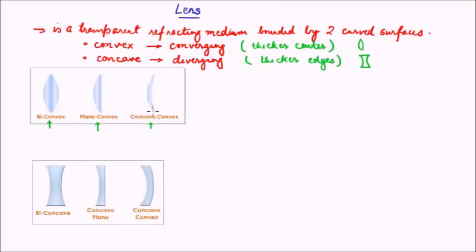In the concavo-convex lens, one surface is convex and the other is concave. But how do we differentiate it and say whether it belongs to the convex category? It belongs to the convex category because the center region is thicker than the edges. Now, for concave subcategories, the parallel classifications are bi-concave — both surfaces being concave, similar to bi-convex. Then we can have concavo-plano, where again there is a plane surface and a concave surface.